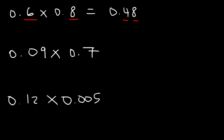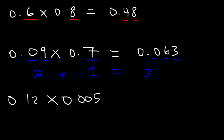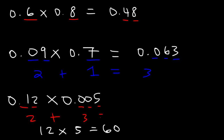Looking at the next number, 9 times 7 is 63, so 0.09 times 0.7 is 0.063. Here we have two digits and here we have 1 — 2 plus 1 is equal to 3, so we need a total of three digits in our answer. Now, what about the last one? 12 times 5 is 60. The first number has two digits, the second one has three digits. 2 plus 3 is 5, so our answer has to contain five digits.